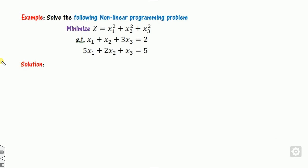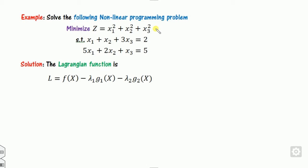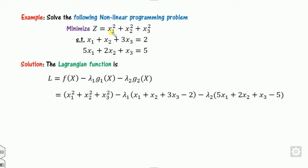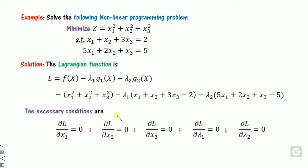Let's discuss some examples following the same rule. Look at how many constraints there are — there are two constraints. The variables x1, x2, x3 are clearly unrestricted in nature since x1 and x2 are not constrained to be greater than zero. First, we define the Lagrangian function: L = f(x) minus lambda1 times g1 minus lambda2 times g2. After substituting and moving terms to the left-hand side so the right-hand side equals zero, we define the necessary conditions.